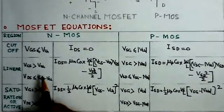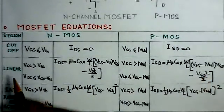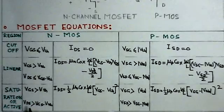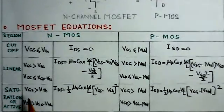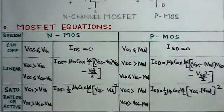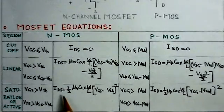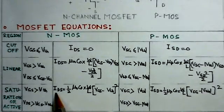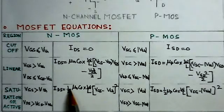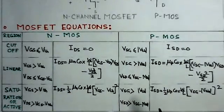These corresponding equations for N and P types for the linear region. The equation for the saturation region is the condition is that VGS should be greater than V threshold and VDS should be greater than VGS minus V threshold for the N type of MOSFET. And the current equation is here IDS half mu N COX W by L, VGS minus V threshold whole square.